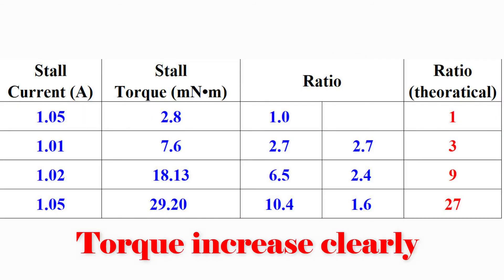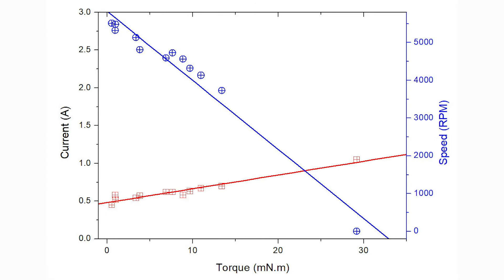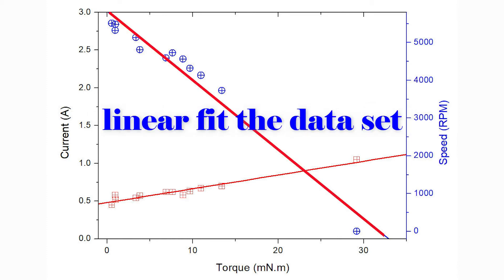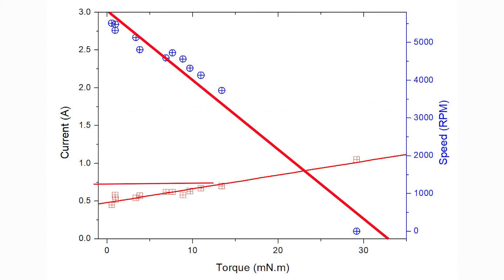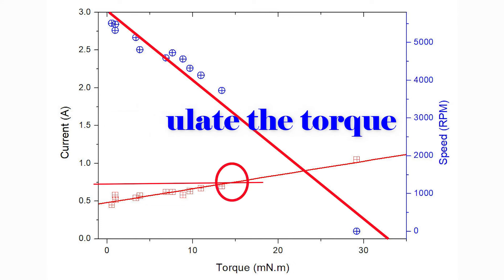Even though, the increase of the torque is obvious and effective. Let's compare the motor speed and torque at the working current 0.7A. The method is like this: linear fit the data set, calculate the torque under the working current 0.7A, use the result to find out which speed corresponds.